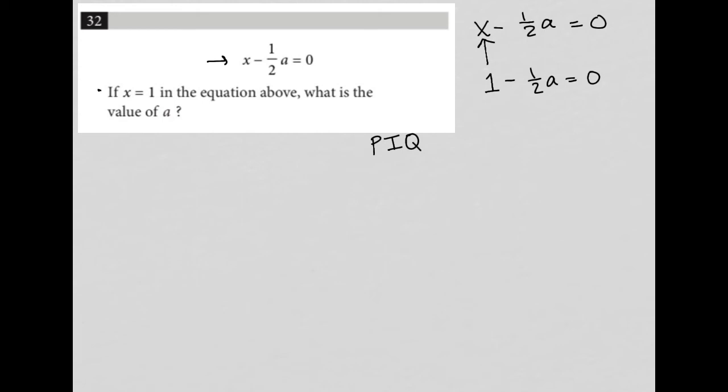I'm going to add one-half a to both sides of the equation. This way, the negative half a and positive half a cross out, so I'm left with one equals one-half times a.